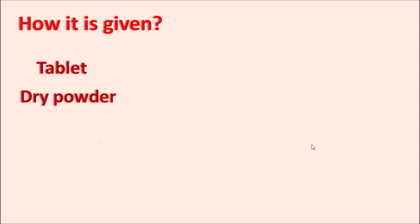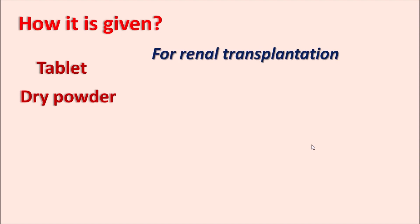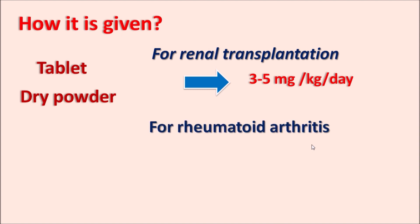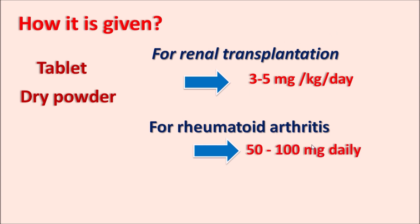Azathioprine is available as a tablet and as a dry powder for IV solution. The dose depends on the clinical indication and the patient's TPMT activity. As an immunosuppressant for renal transplant rejection, the initial dose ranges from 3 to 5 mg/kg/day. For rheumatoid arthritis and other inflammatory disorders, the dose is 50 to 100 mg daily, and may be increased by 0.5 mg/kg every week based on treatment efficacy.